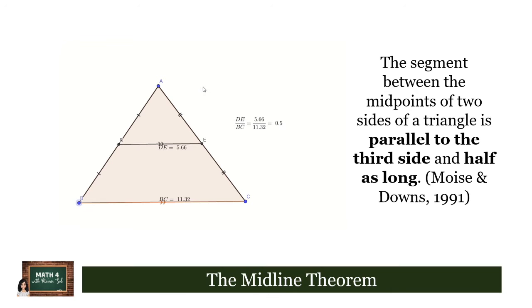The second part of the theorem states that the length of the midline is half the length of the third side. The proof of this theorem may be found on your learning guide, so we are not going to discuss the proof itself here. However, let's try to validate that using this figure here.